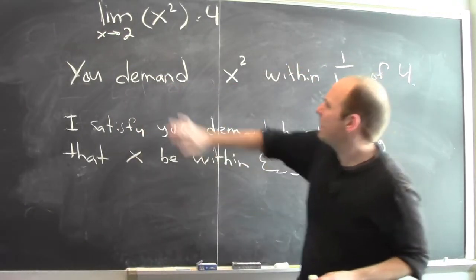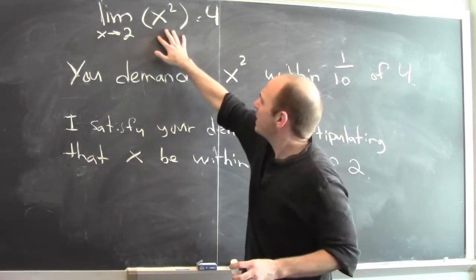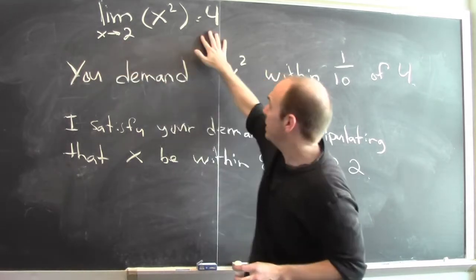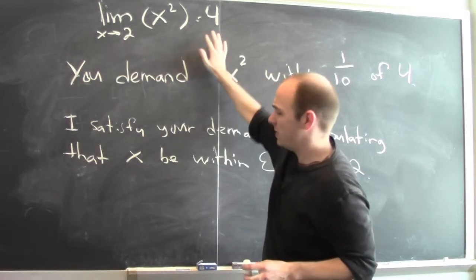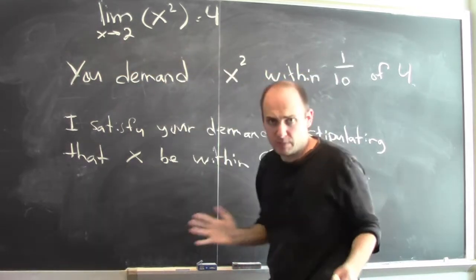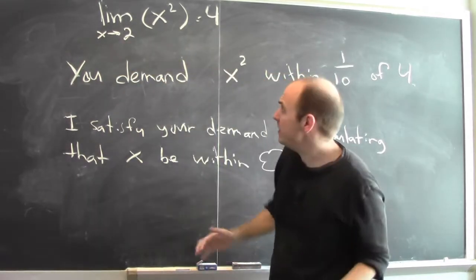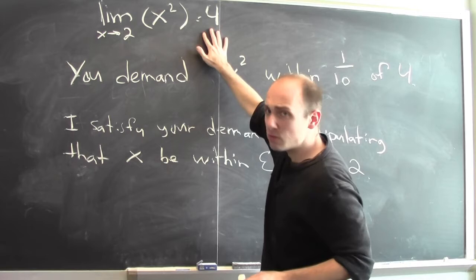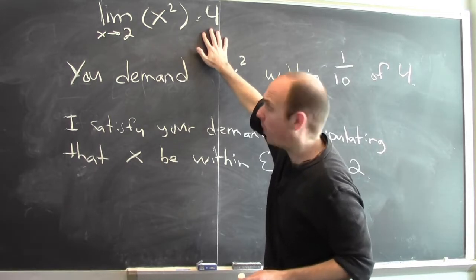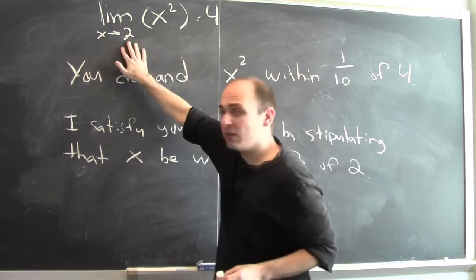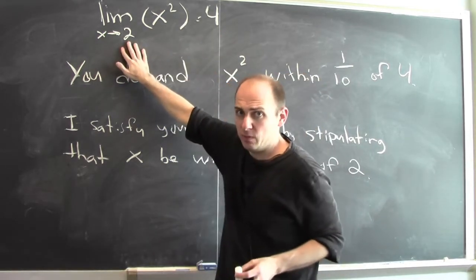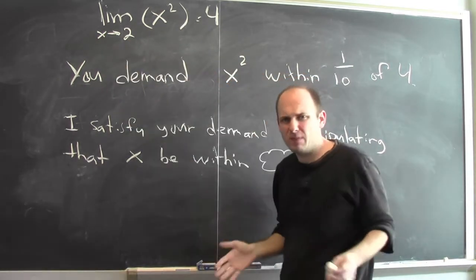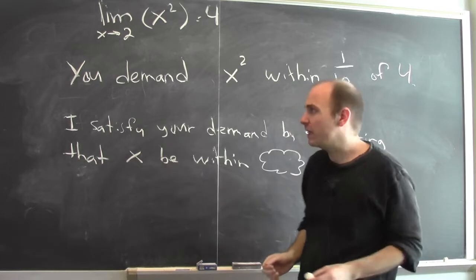What does it mean to say that the limit of x squared as x approaches 2 is 4? Strictly speaking, it means that you can make x squared as close as you want to 4 by making x sufficiently close to 2. But talking in that way can be a little bit confusing.